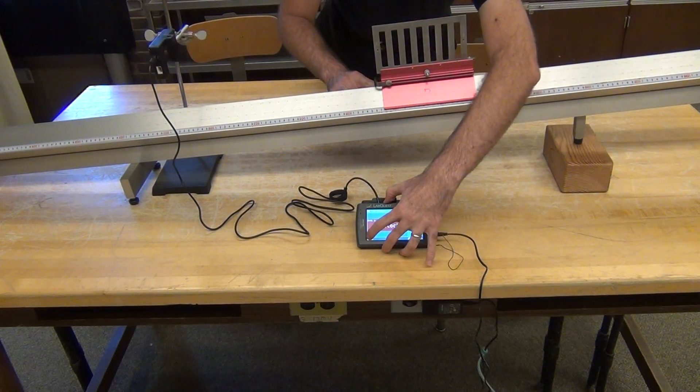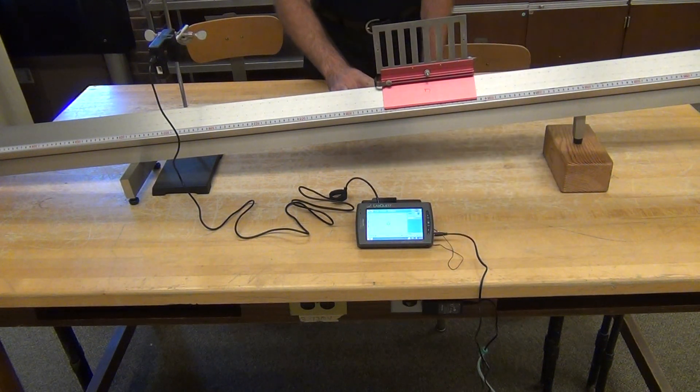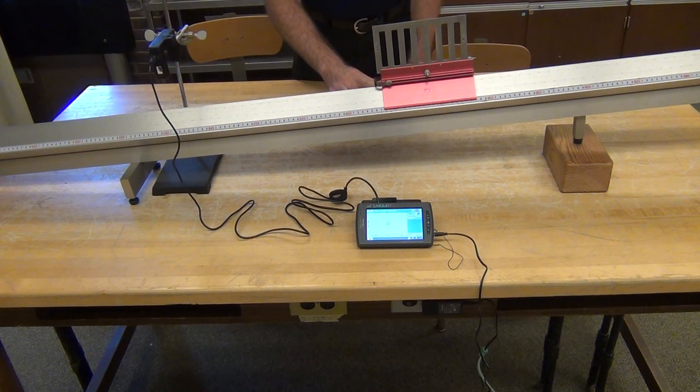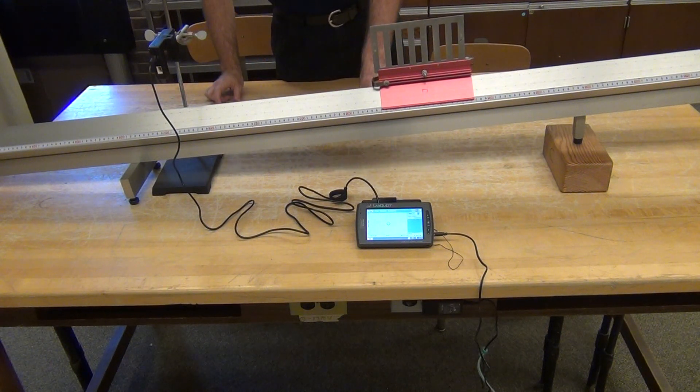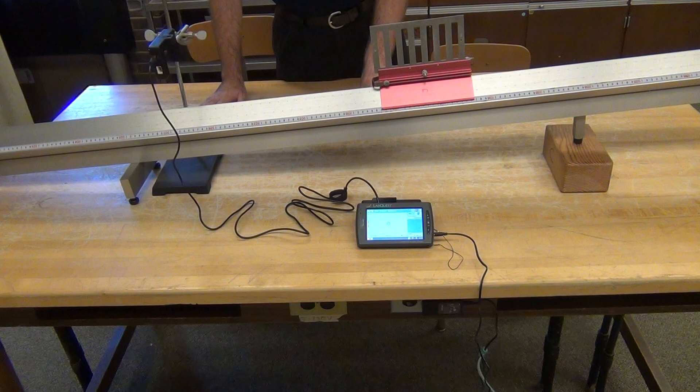I then start the run, and until this lead edge breaks the Photogate, the clock doesn't start. So I can get ready. I want to release the Photogate without giving it any sort of push.